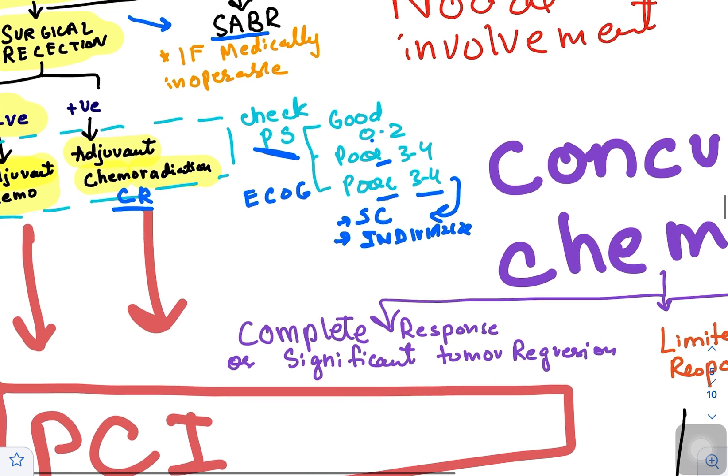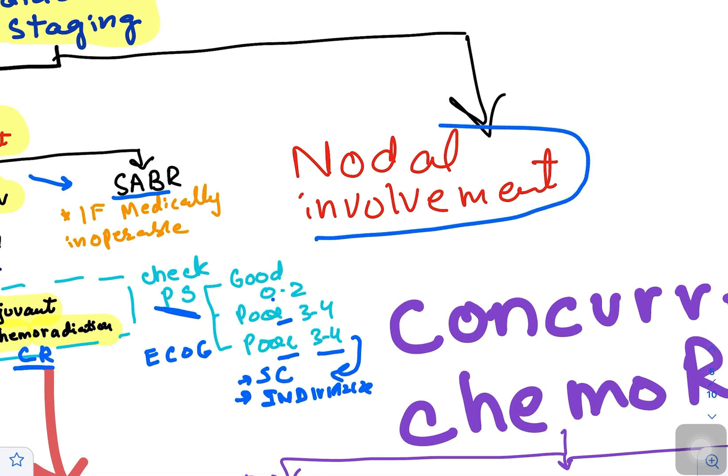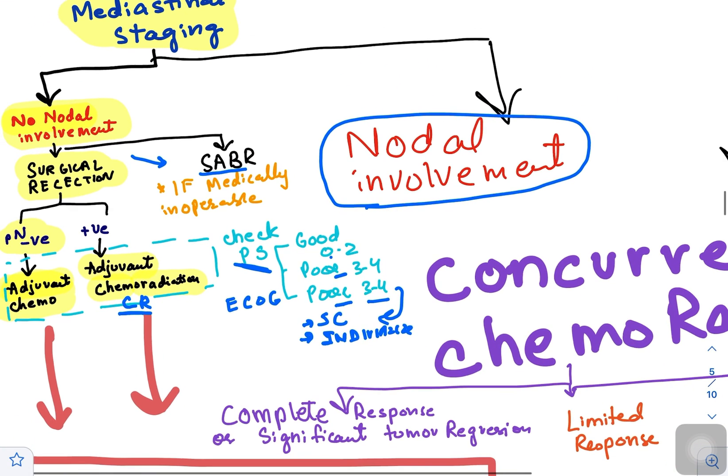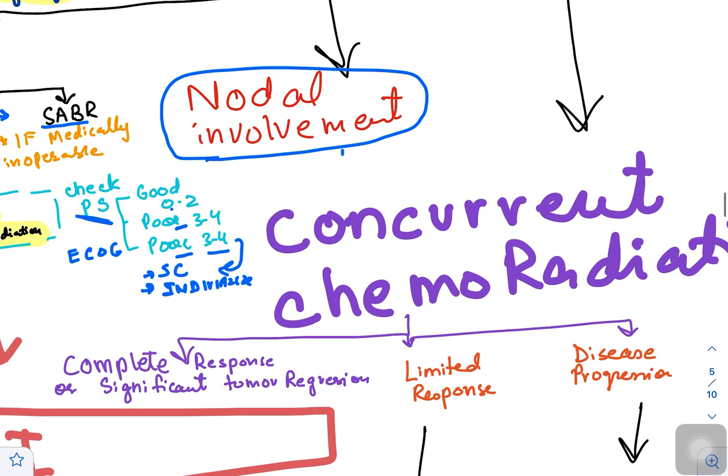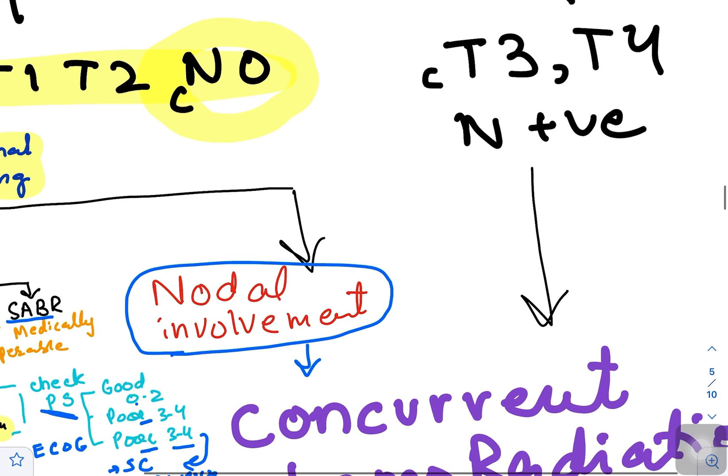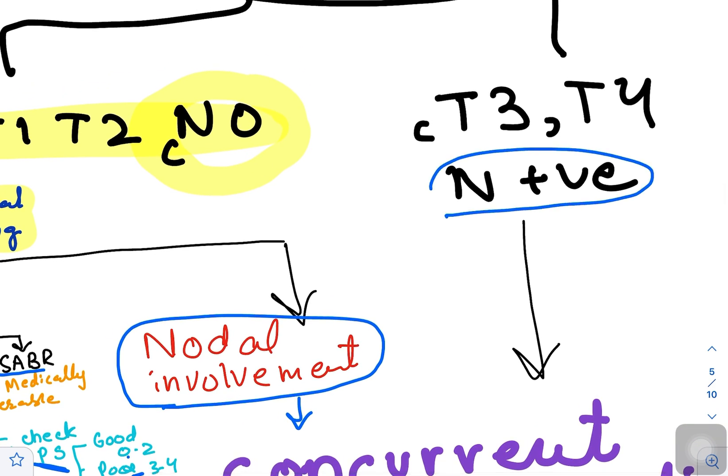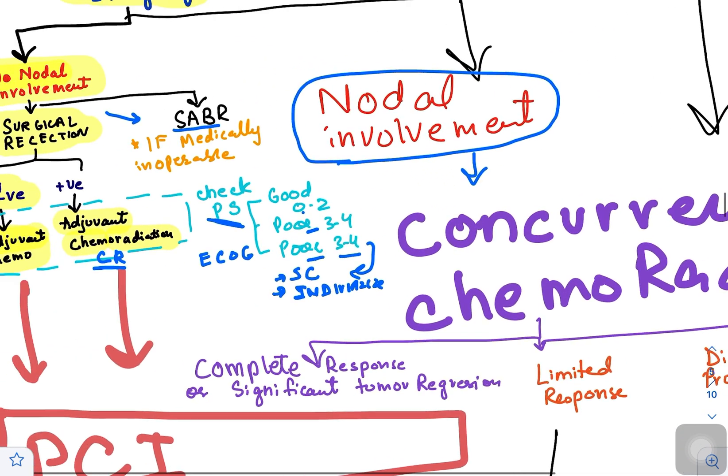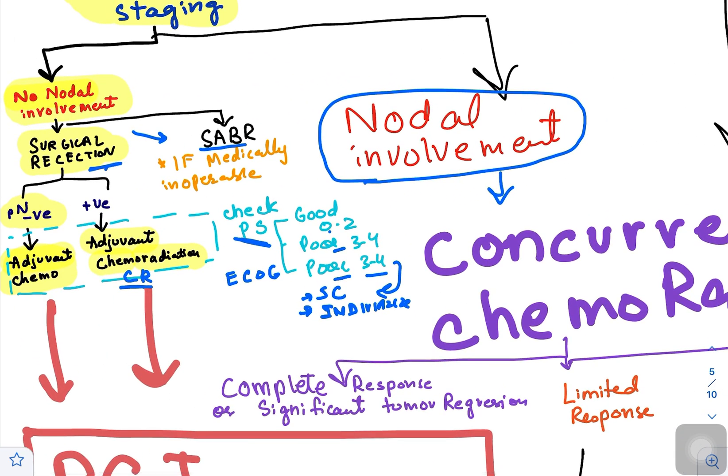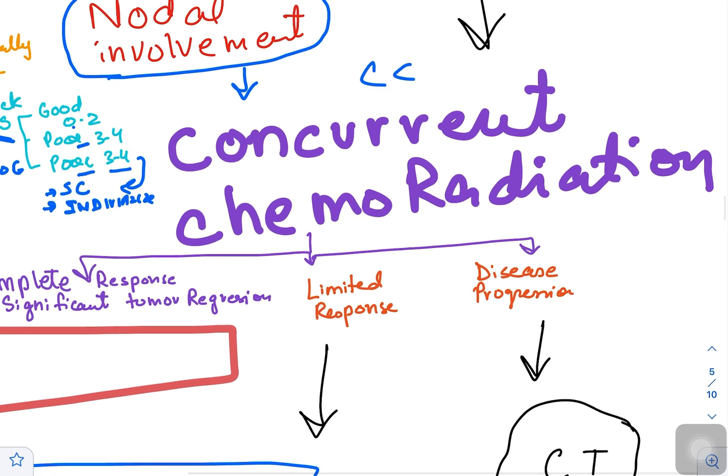Let's go back. What if there is nodal involvement? If nodes were positive or clinically patient was T3-T4, then the option is not for surgery; it's for CCRT - concurrent chemoradiation therapy. Then according to this response, you can treat and take the patient further on.